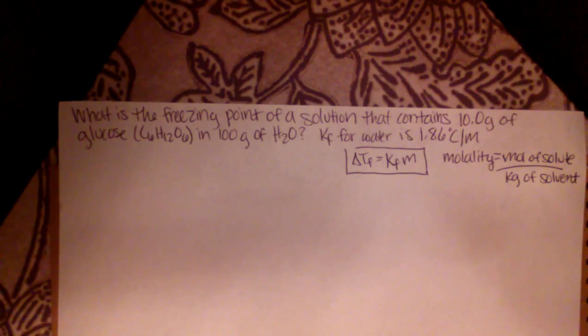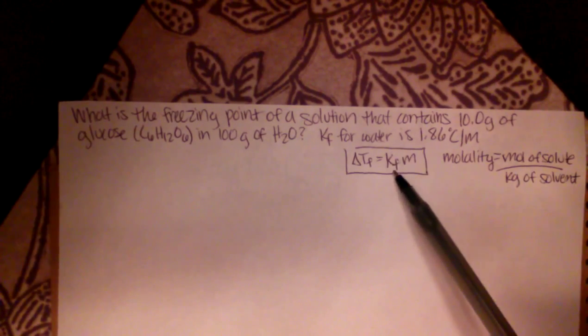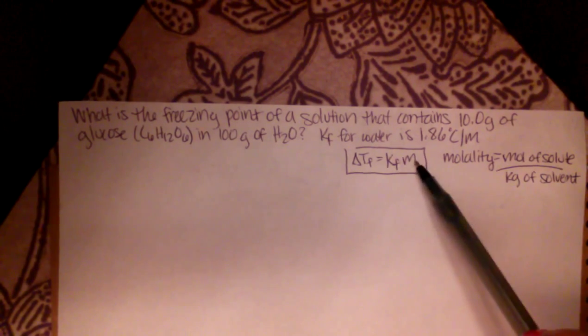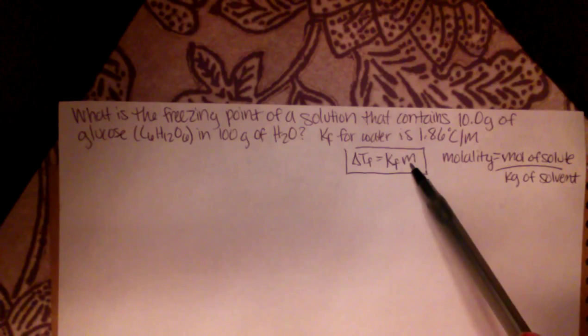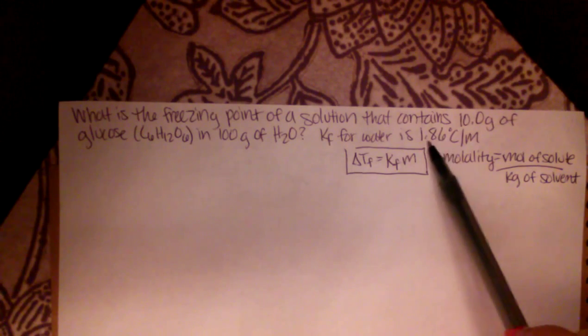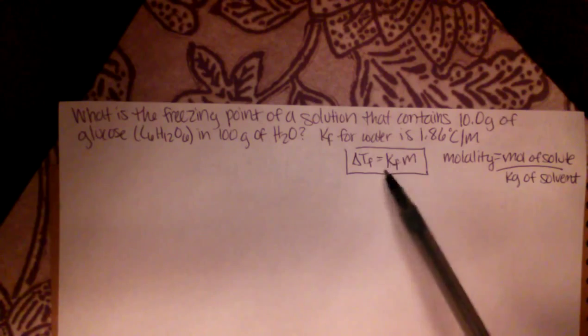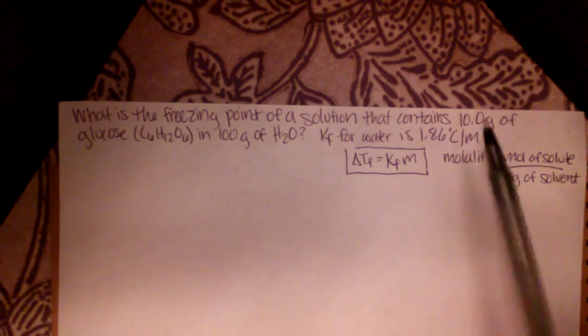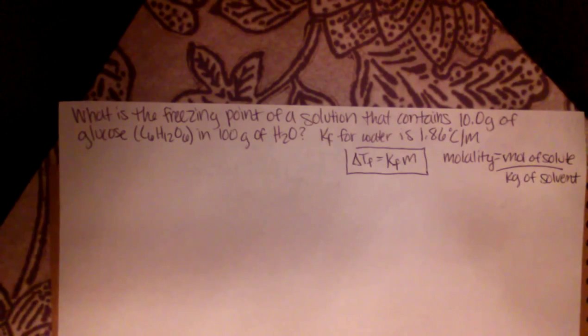First of all, in this problem, we can see that since we're using this equation, we only have one variable to solve for because the KF value for water is given to us already. So we can plug that in right here when the time comes. However, we do not have molality yet. So let's calculate molality.